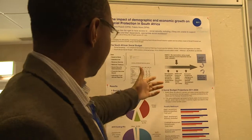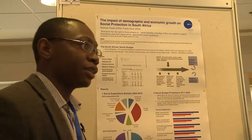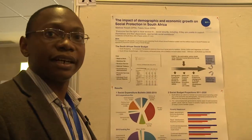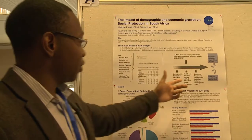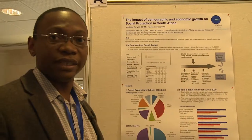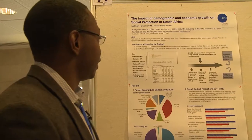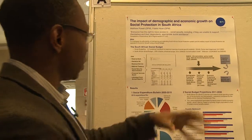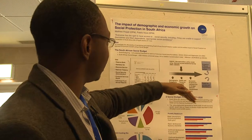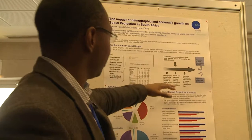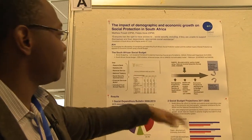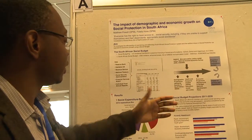The first sub-component is demographic projections done by the Actuarial Society of South Africa. These were combined with economic projections from the National Treasury and the National Planning Commission to project expenditures in health, private pensions, and education.